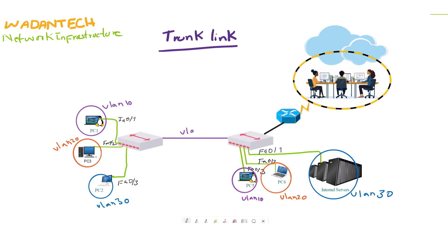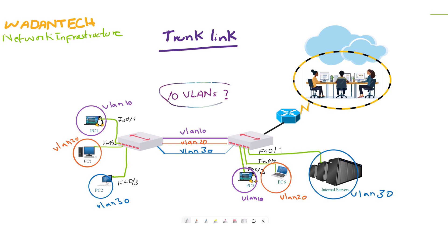The same applies for VLAN 20 and 30 — we must use a separate cable between the switches for having a connection between devices connected within different switches. Now the question is: what happens if we have 10 VLANs? Do we need 10 extra connections between the switches, one cable per VLAN?